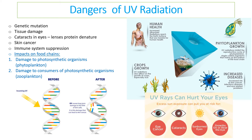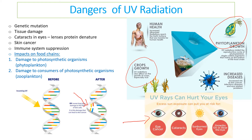Ultraviolet radiation damages DNA, leading to tissue damage, mutations, cancers, and cataracts. The eyes are particularly sensitive to UV — you can get eye cancer, cataracts, sunburn in the eyes, or growths near the eye that impede sight. Phytoplankton, the main producer of the sea, is affected, and crops can also be damaged — particularly rice crops are prone to damage by ultraviolet radiation.